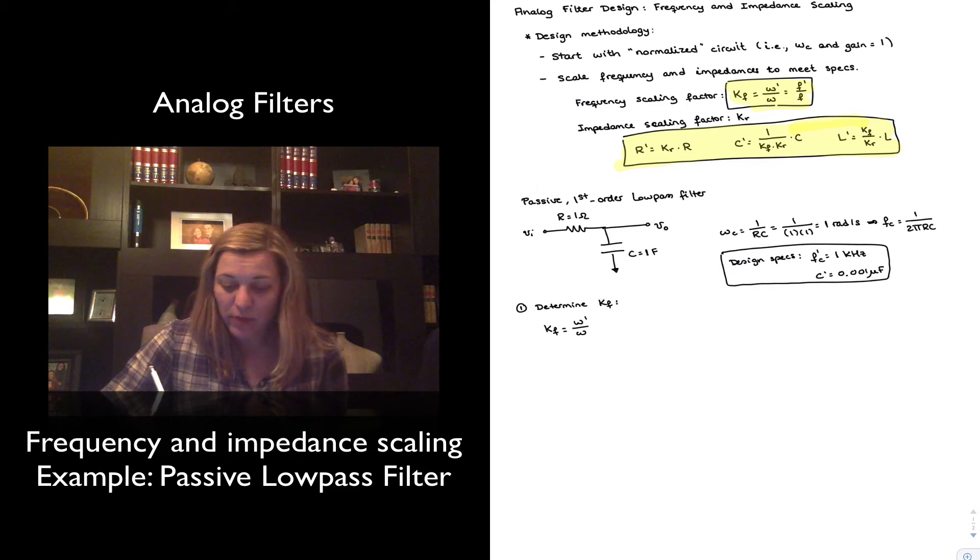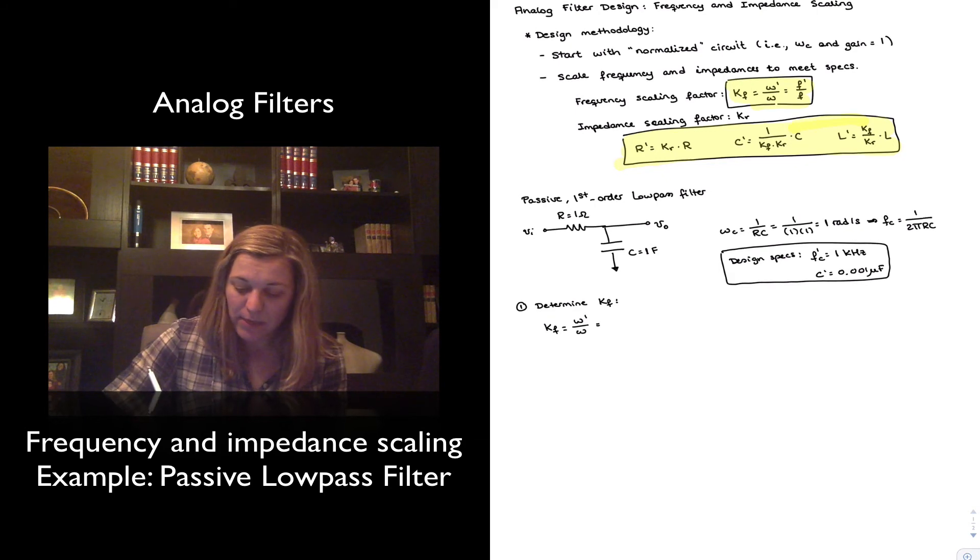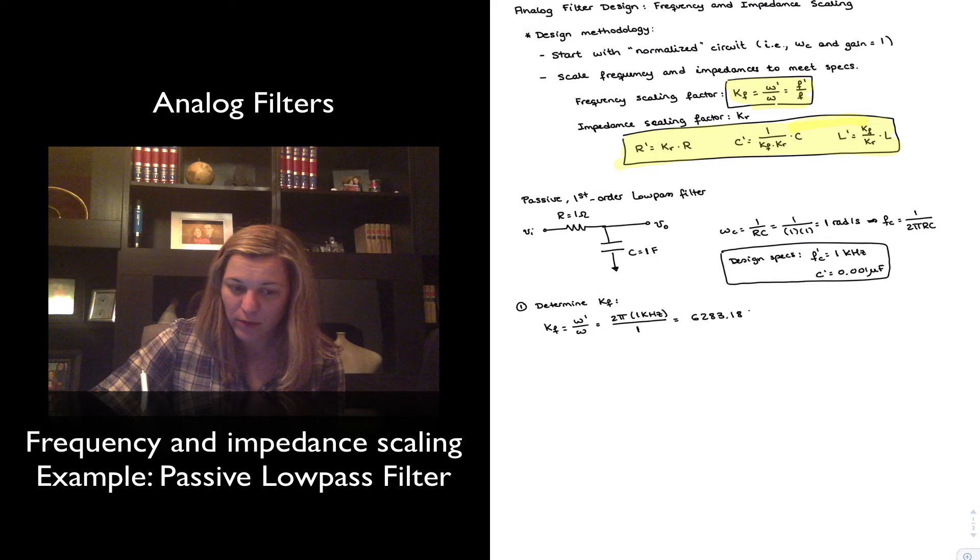Since we know the value of omega in this circuit is one radian per second, we can just say omega prime is going to be equal to 2 pi times f prime, which is 1 kilohertz, divided by 1 radian per second, the value of omega for this circuit. And that gives me 6,283.185.